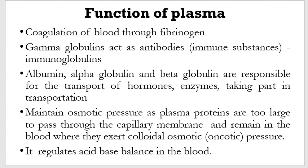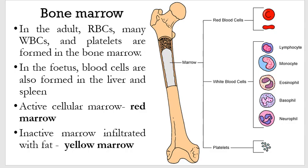Having said that, now we want to look at the question: where does blood come from? In the adult, many of the red blood cells as well as platelets and white blood cells are formed in the bone marrow. Whilst in the fetus, blood cells are formed in the liver and the spleen as well. We have components of the marrow known as active cellular marrow that ensure these processes occur, whilst the inactive marrow is yellow in color and does not participate in this.